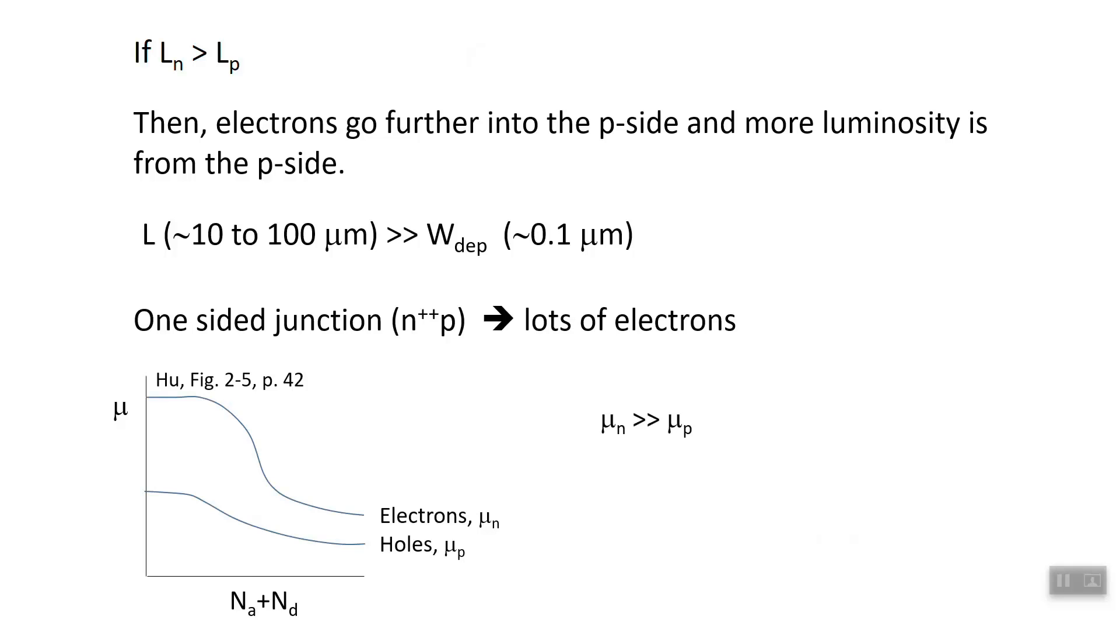Given that electron mobility is typically quite larger than hole mobility, the electron diffusion coefficient will be much larger than the hole diffusion coefficient because they are linearly related: D is proportional to μ. So if electrons have a larger diffusion coefficient, they are also going to diffuse farther because the diffusion length is proportional to the square root of the diffusion coefficient.